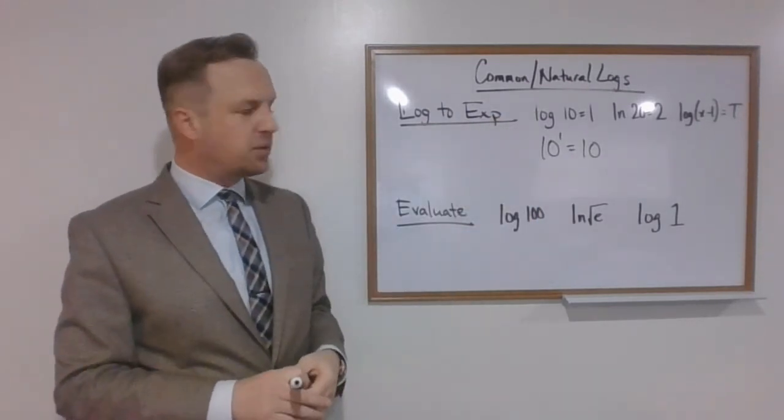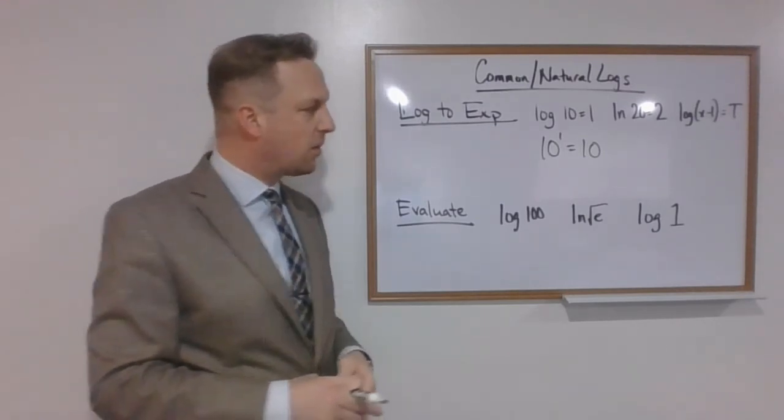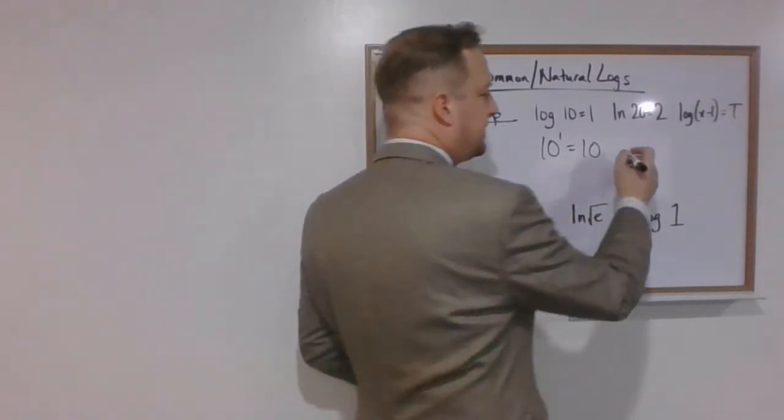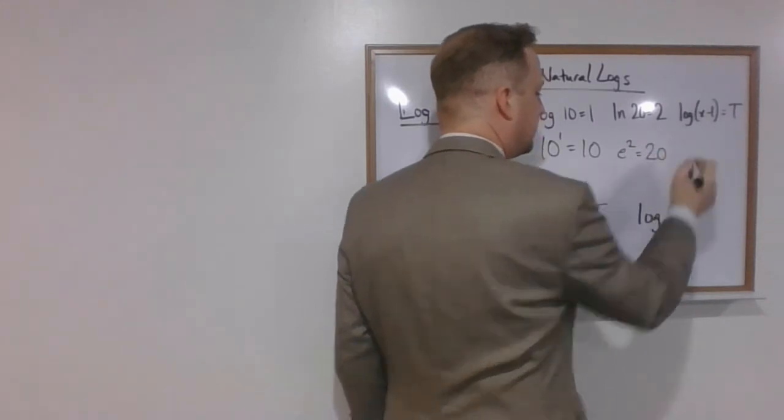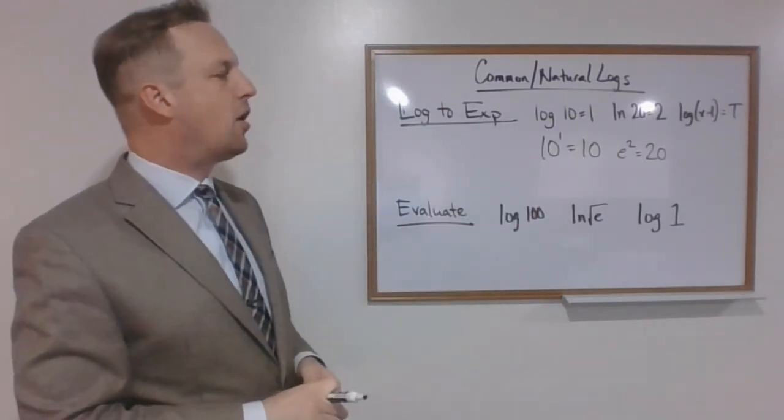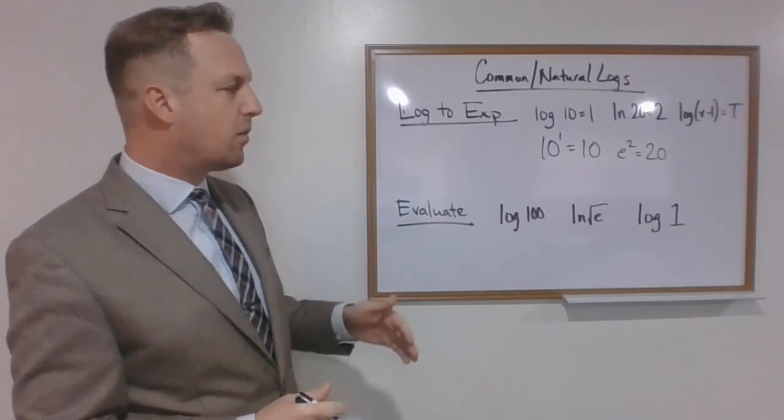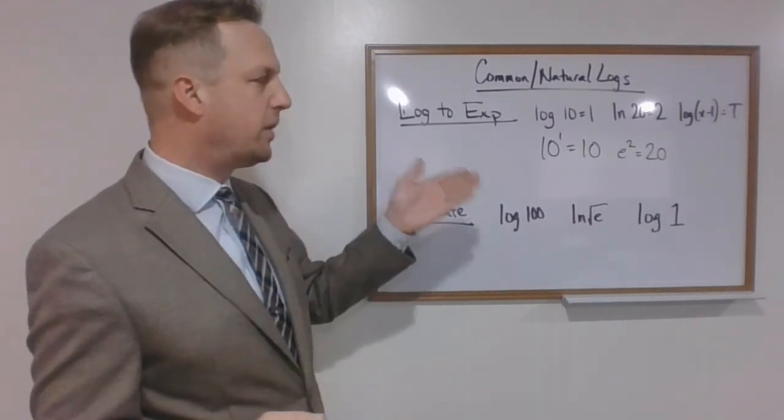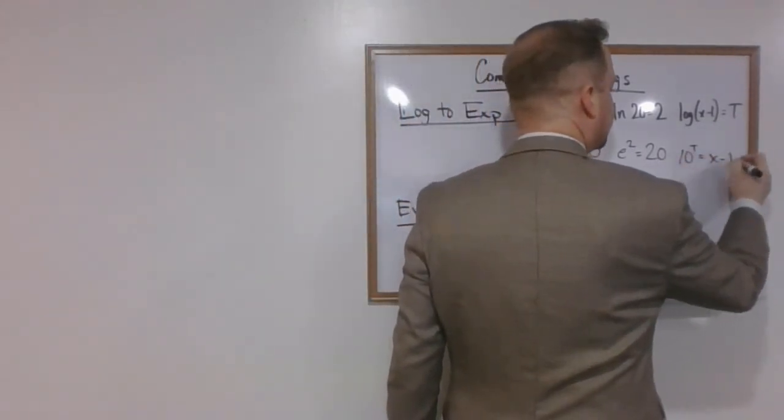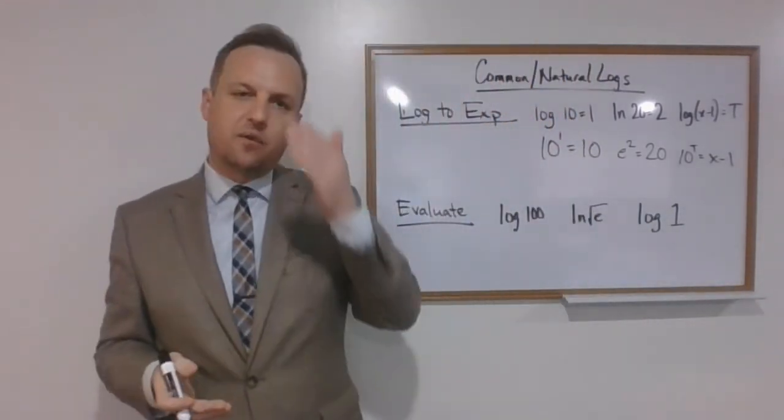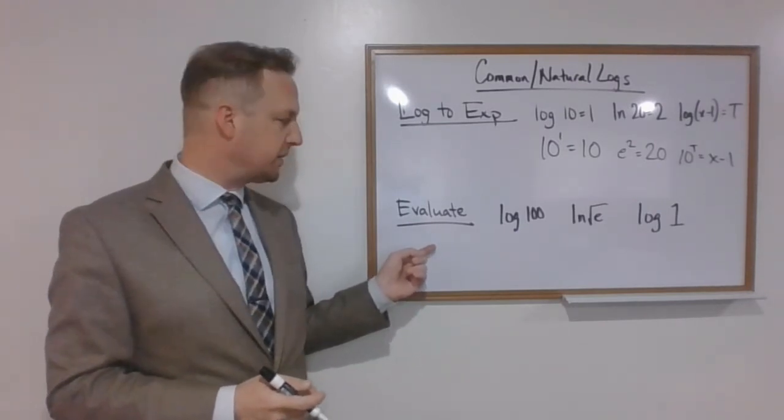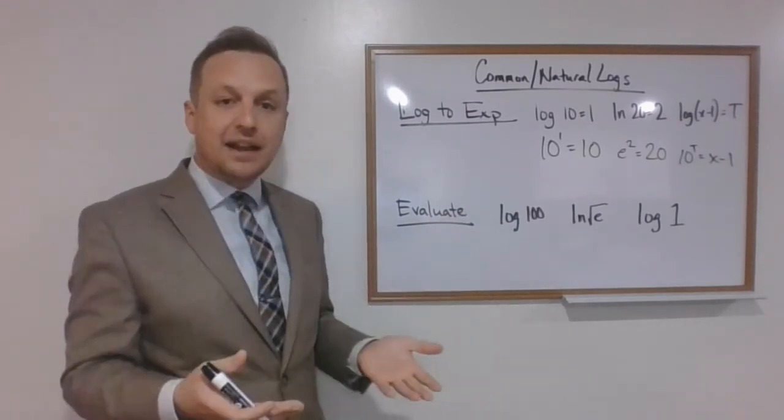What about that next one? The natural log of 20 equals 2. Well, the only trick here is knowing what the base is. And because it's a natural log, we know the base is e. So e squared equals 20. Pretty simple there. How about this last one? The log of x minus 1 equals t. Don't let the variable scare you. We know our base is 10 here. So we're just going to write 10 to the t power equals x minus 1. These are just converting back and forth. Don't worry that you're not immediately seeing an answer.